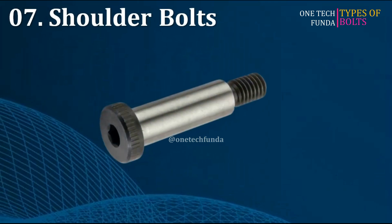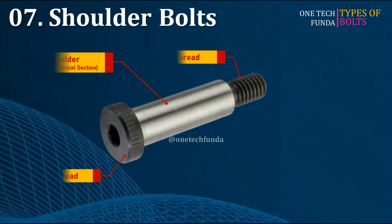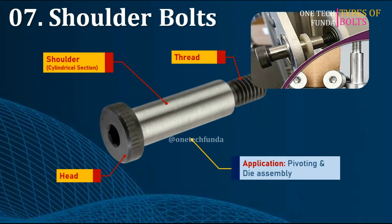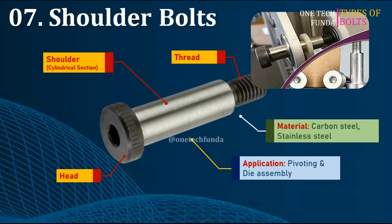Shoulder bolts feature an unthreaded cylindrical section — the shoulder — between the head and threads. Often used in machinery for pivoting and die assembly. Materials include stainless steel and carbon steel. The main advantage is they provide precise alignment.